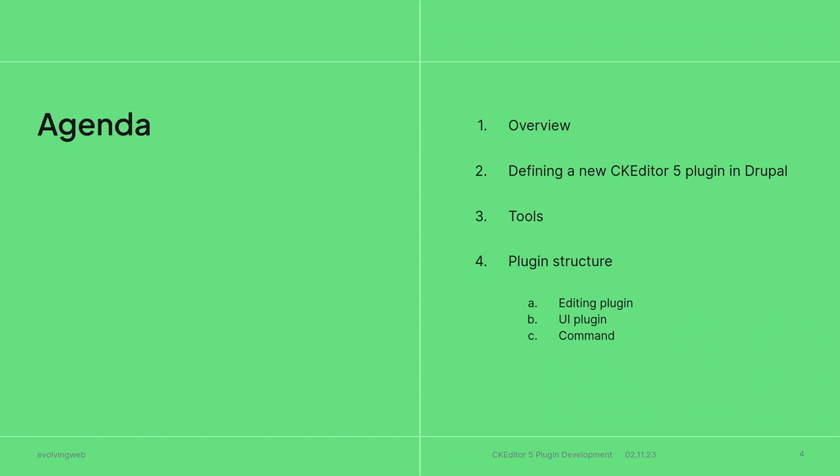I'm going to be showcasing some tools, and then cover the structure of the plugin. It has three keys: editing plugin, UI plugin, and the command. I want to make a remark here — I'm calling them plugins, but in fact they are part of the plugin. We have one plugin, but technically they extend the plugin class, so I'll refer to them as plugins.